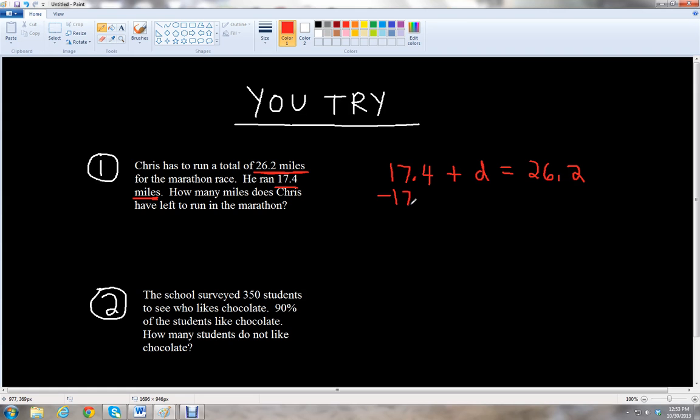So, to solve for D, we're going to subtract 17.4 to both sides. And these 17.4s cancel. So, we'll have D equals, and we subtract, 26.2 minus 17.4. So, you have to borrow, 5, and the 12, that's 8. Then we have to borrow one more time, then we get the 1. And then this becomes 15. So, that's going to be 8, 8.8. So, Chris has 8.8 miles left in the marathon to run.